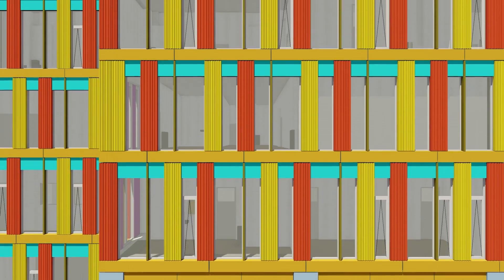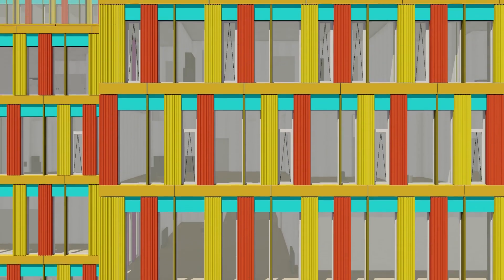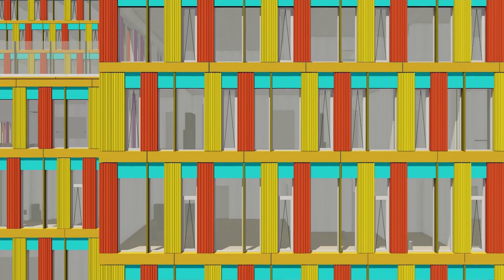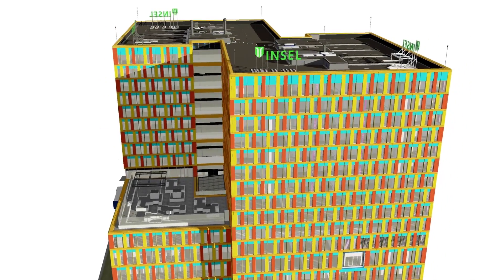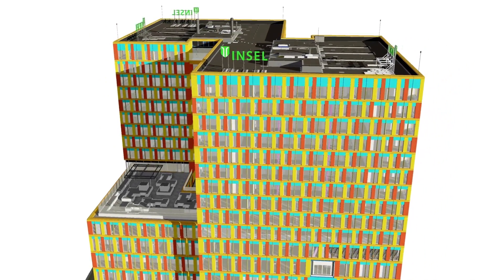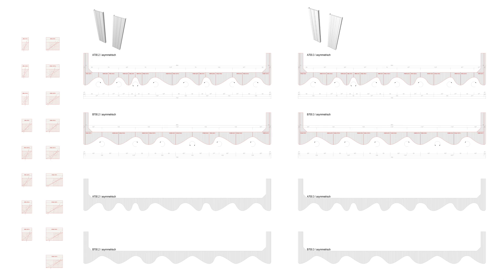With an outer shell of 24,000 square meters, standardization is absolutely essential. For this reason, we reduced the facade component types to a minimum. This made it possible to design the entire facade with a type matrix plus 45 individual element types.